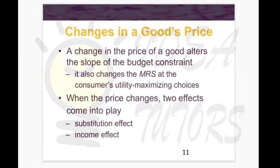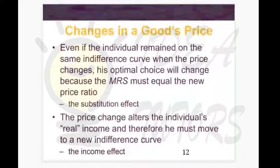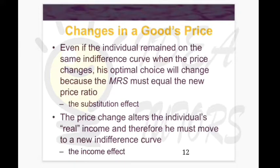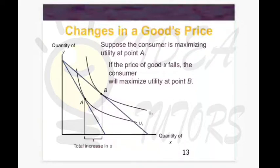This change in price leads to two effects: substitution effect and income effect, which together make up the total price effect. If the individual remains on the same indifference curve after the price change, it is the substitution effect. If the price change moves the consumer to a new indifference curve, it is the income effect. Substitution effect results in movement along the same indifference curve.